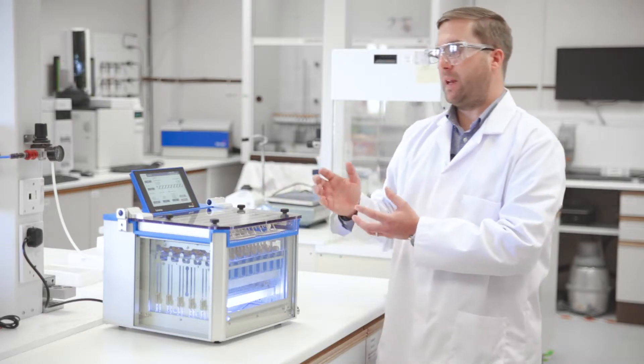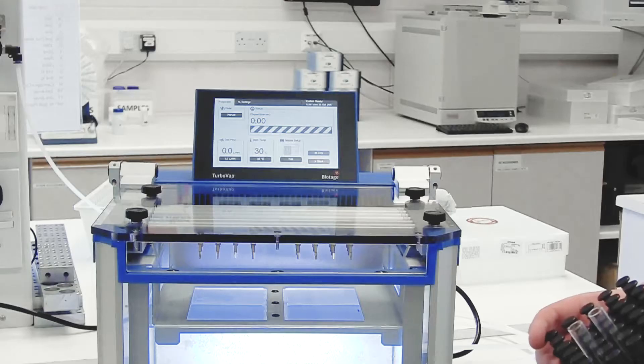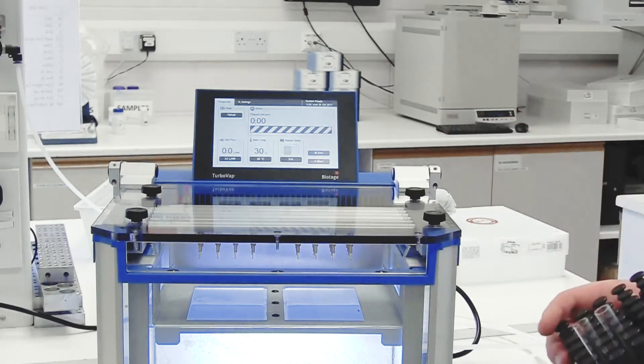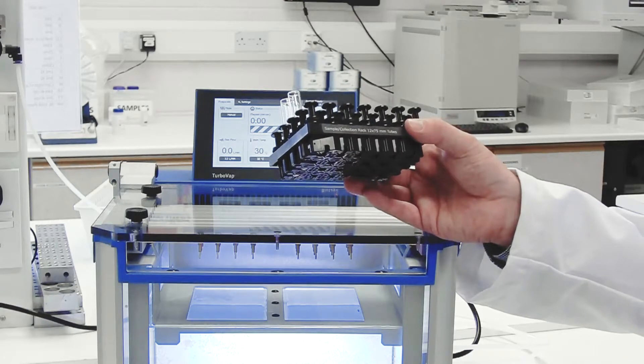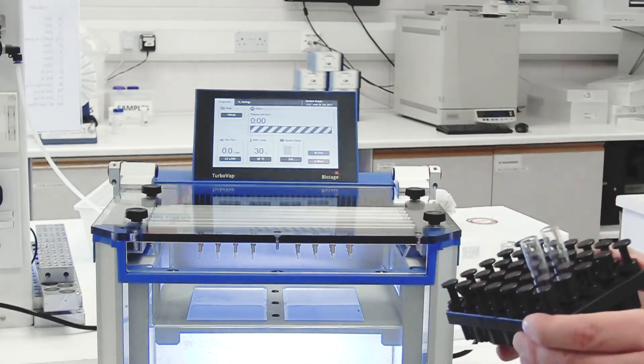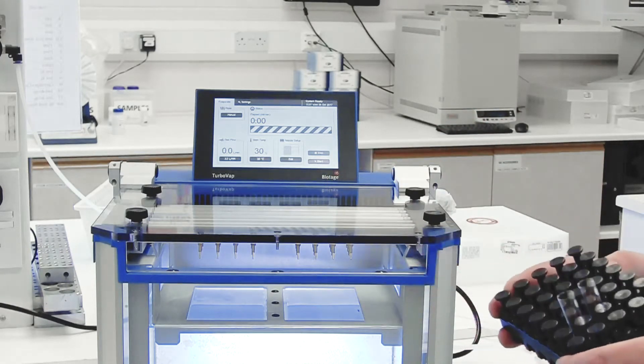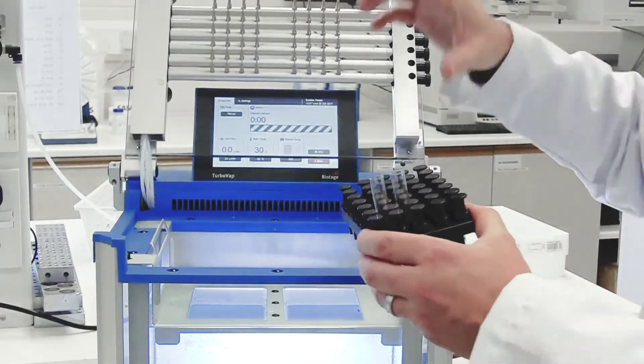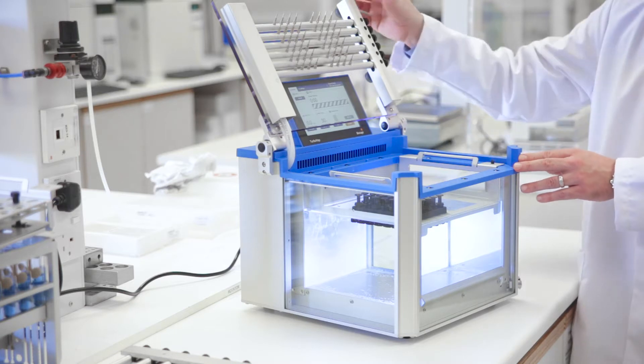With this release, we bring in the TurboVap EH, which streamlines your processing from the Extrahera platform onto the TurboVap. I've got an Extrahera collection rack here. Let's assume we've eluted our columns, we've got our sample extracts here, and we need to evaporate these either for solvent exchange or to achieve our LOQs. You're able to take the Extrahera collection rack and place it straight into the TurboVap EH.